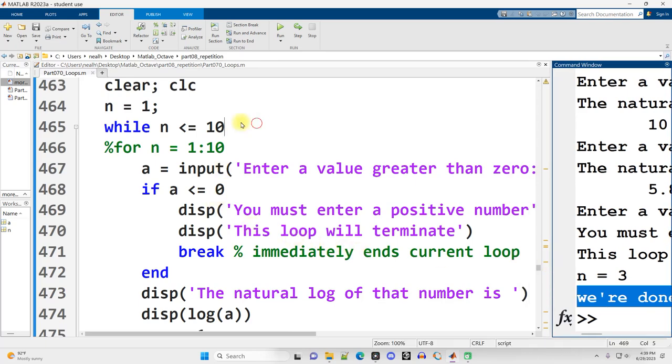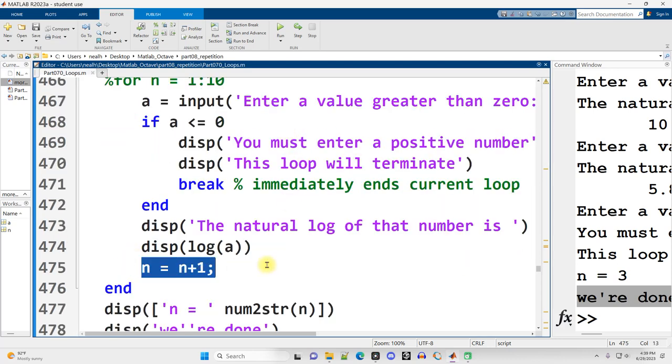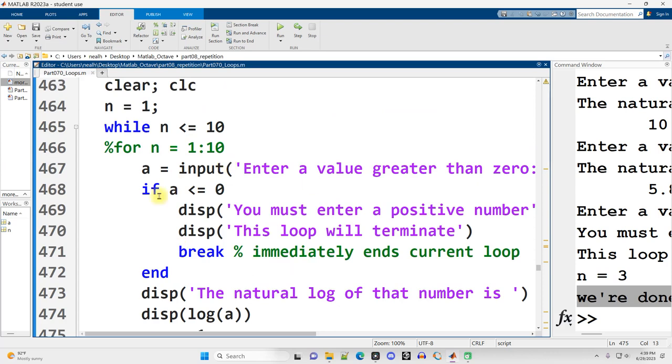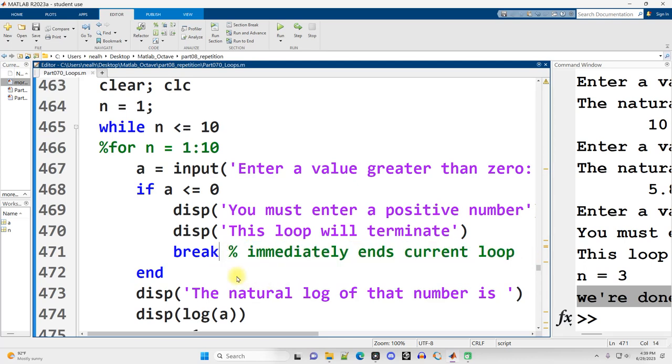The loop was going to repeat up to 10 times. We started with n equals 1. We said while n is less than or equal to 10, and then we increased n by 1 down here. So the loop should repeat up to 10 times. But what break does is that it immediately ends the current loop. You don't need any of this comment right here. That's just comment. The command is literally just the word break, nothing else.